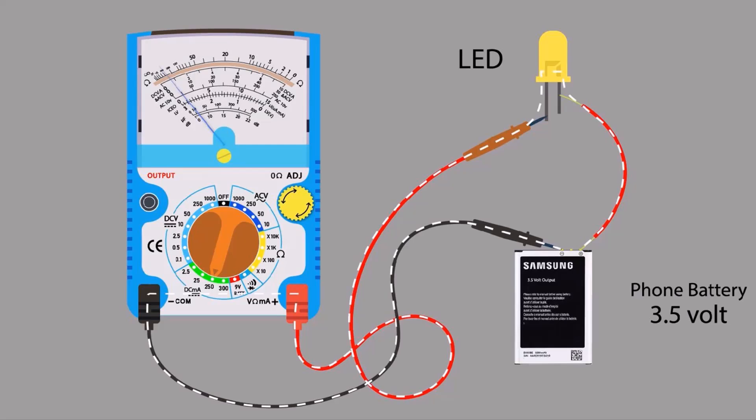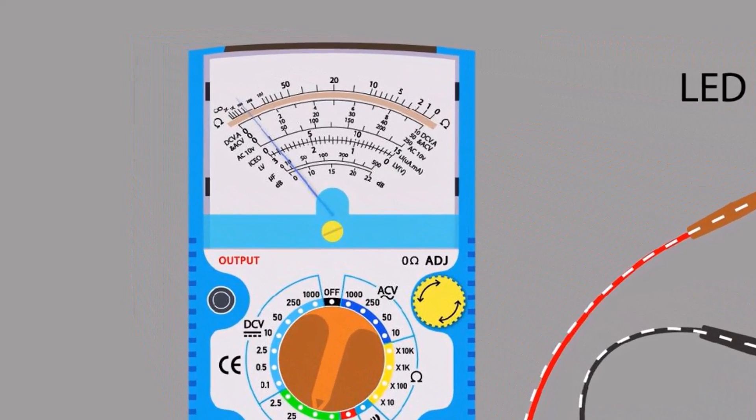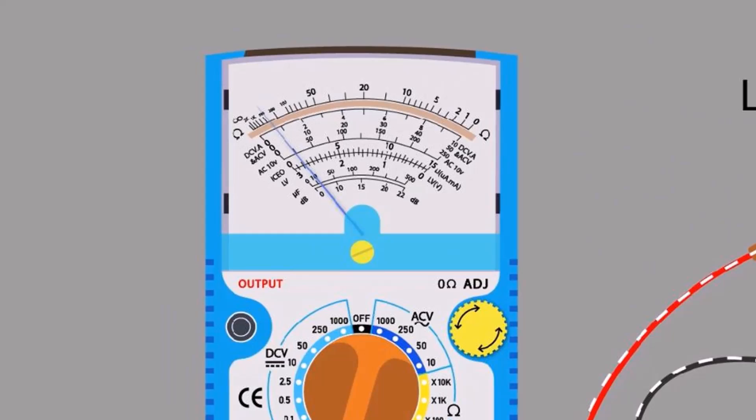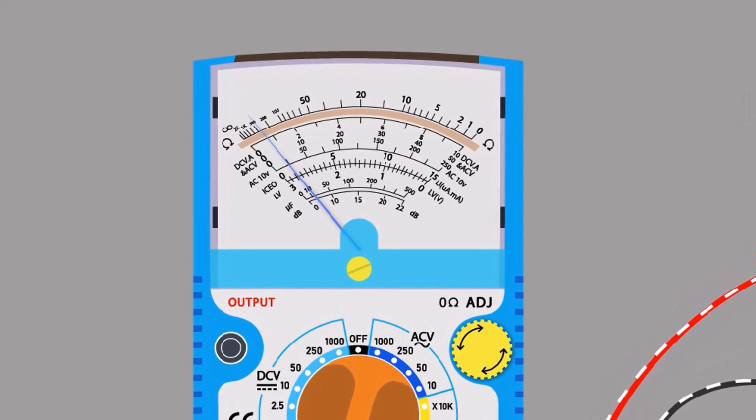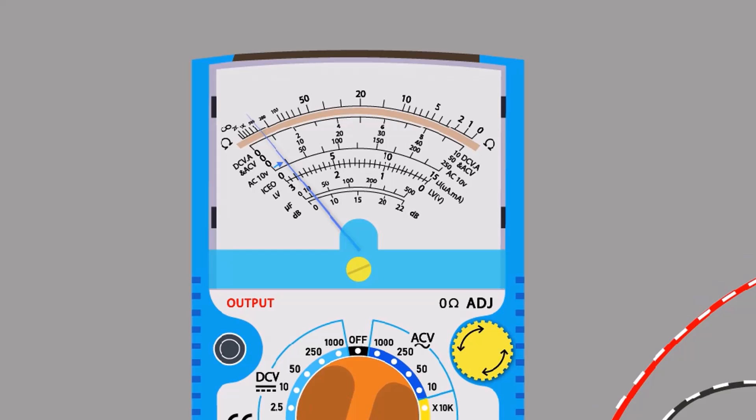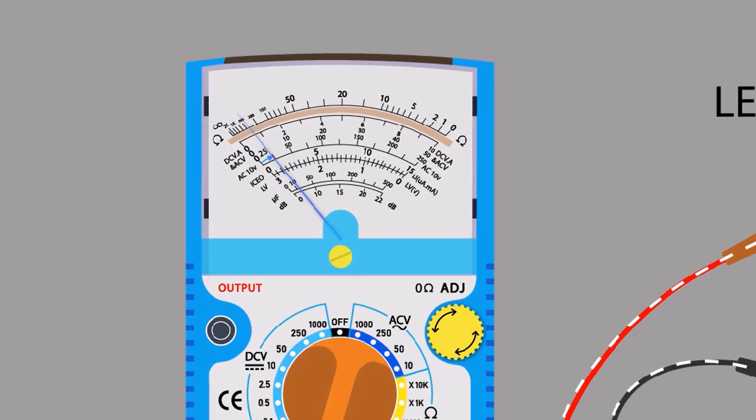Here is a question. There are many scales on display, which scale we need to see? We know that we have selected 250 milliampere range, so we will see that scale. If we see the needle, it is at about 25. It means our load is taking 25 milliampere current.